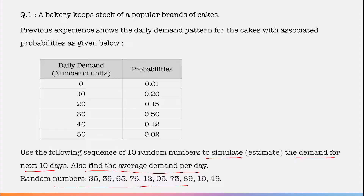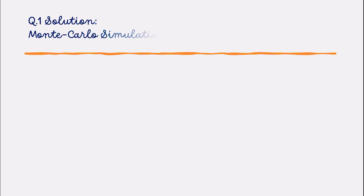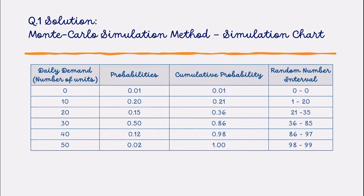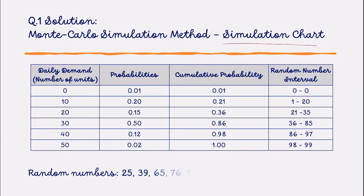The previous experience shows the daily demand pattern and associated probabilities are given. The method we are going to use for simulation is the Monte Carlo simulation method. First of all, we have to make the simulation chart with four columns. The first two columns are copied as given in the question — daily demand: 0, 10, 20, 30, 40, 50 — and the probabilities are also written as given. The third and fourth columns we have to find out ourselves.